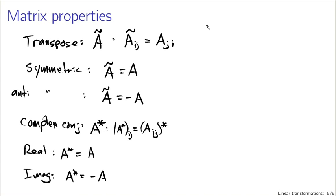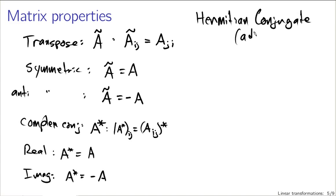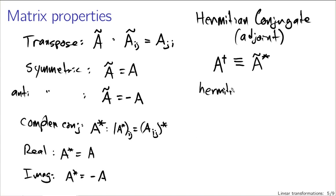Where things get interesting is defining combinations of these: the Hermitian conjugate, also sometimes called the adjoint, of a matrix. The notation is A-dagger — the Hermitian conjugate A-dagger is defined to be the complex conjugate transpose of the matrix. We describe a matrix as Hermitian if A-dagger equals A, or anti-Hermitian if the Hermitian conjugate equals minus the matrix.